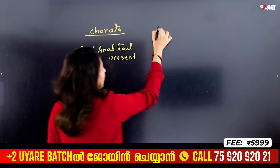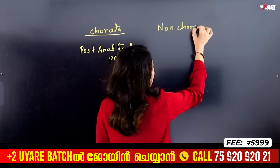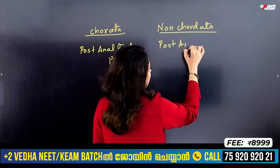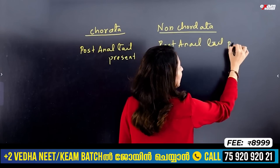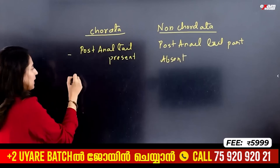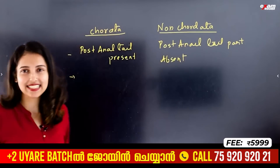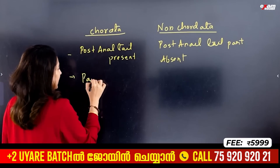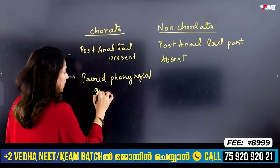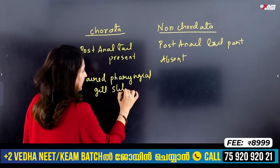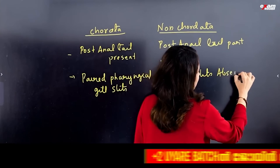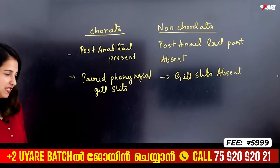In chordates, post-anal tail is present. In non-chordates, post-anal tail is absent. The second feature is pharyngeal gill slits, which are present in chordates.